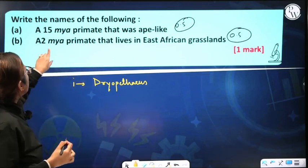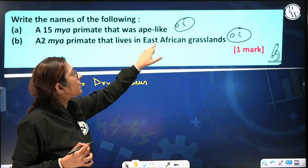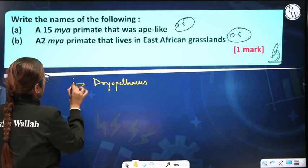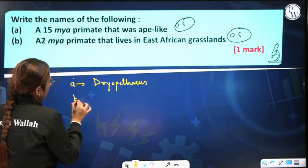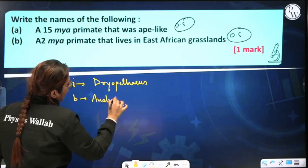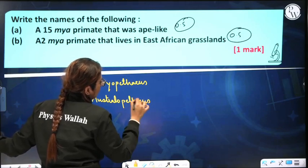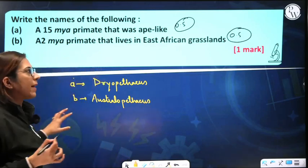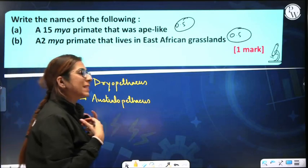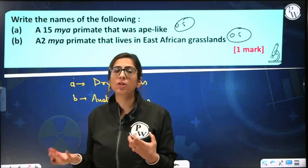At 2 million years ago, a primate that lived in East African grassland — the answer is Australopithecus. Remember both Dryopithecus and Australopithecus — both are important. This is a previous year question, so questions like this can be asked in your examination. An example of how the question can be modified: what were those organisms who started burying their dead relatives? Please give the answer in the comment section.